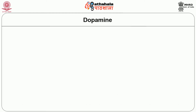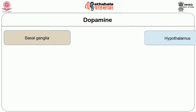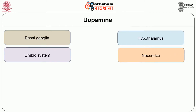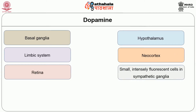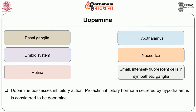The next neurotransmitter is dopamine. It is secreted by nerve endings in the basal ganglia, hypothalamus, limbic system, neocortex, retina, and small intensely fluorescent cells in sympathetic ganglia. Dopamine possesses inhibitory action. The prolactin inhibitory hormone secreted by the hypothalamus is considered to be dopamine.